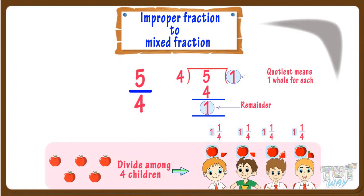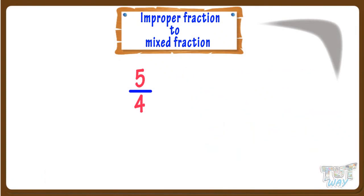A remainder of 1 means 1 apple will be left, and that can again be divided among 4 children — that is, each child will also get a slice which is 1 fourth of an apple. So the share of each child is 1 whole apple and a slice which is 1 fourth of an apple. So 5 by 4 is the same as 1 and 1 by 4.